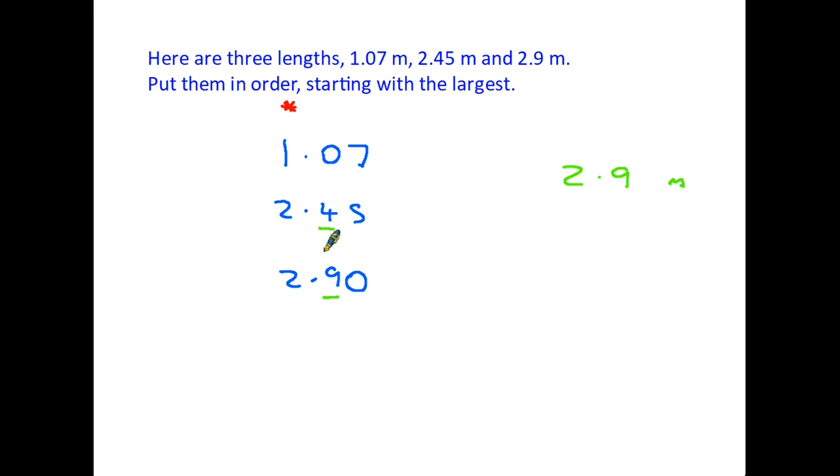Our largest number in this list is 2.9 meters. The second largest must be the middle one, so that becomes 2.45 meters. The smallest one therefore is the only one that we have left, which is the 1.07 meters. Be very careful, you are only looking at the next column. The one after it does not make a difference, and if you want to include the zero on there you can do so, but because it's right on the end it doesn't need to be there.